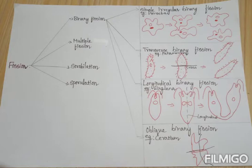Four types of fission are seen in animals. They are binary fission, multiple fission, sporulation, and strobulation.